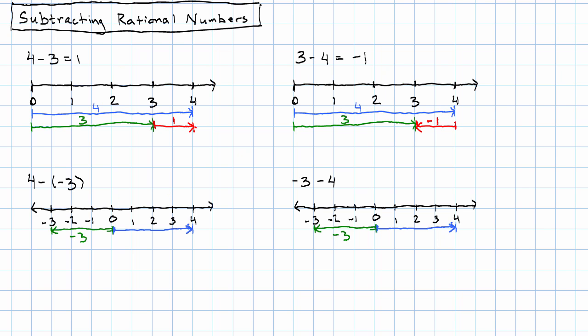4 minus negative 3, that's going to start at the end of negative 3 and go to the end of 4. How long is that? 1, 2, 3, 4, 5, 6, 7. Positive 7. 4 minus negative 3 is apparently positive 7.